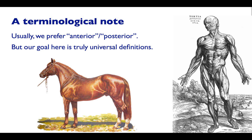I've been using anterior and posterior, but I want to use cranial and caudal as the names of the directions in this talk — cranial meaning towards the head, caudal meaning towards the tail. The reason is that we're looking for truly universal definitions of these terms that apply equally to taxa like humans that have their vertebral columns upright and more sensible animals like horses that have them horizontal.